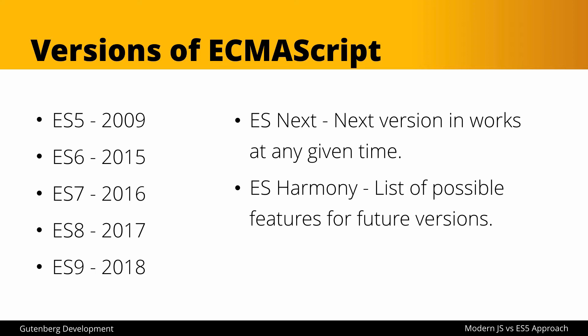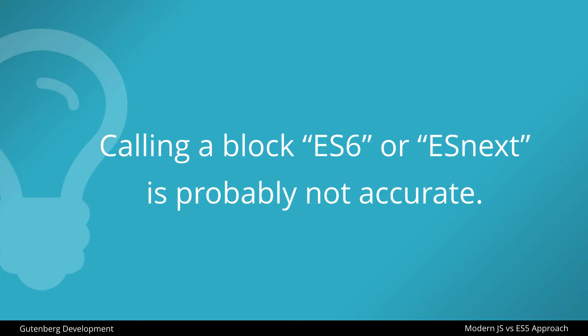These versions of ECMAScript and these terms are important to mention because calling a block ES6 or ESNext is probably not so accurate. Especially early on in Gutenberg development you'll see a lot of articles or resources saying 'this is the ES5 version and this is the ES6 version.' While that may be loosely true, there are some technical inaccuracies, so we're going to refer to the same thing but call it modern JavaScript.